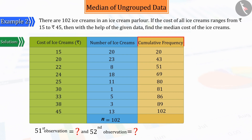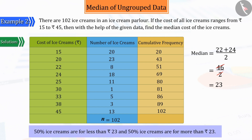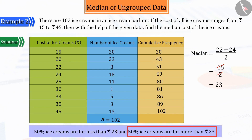From the above table, we can see that the 51st observation is 22 and the 52nd observation is 24, because out of the 102 ice creams, the price of ice creams from the 52nd to 69th is 24 rupees. Now, if we take the average of 22 and 24, it gives the median of the prices of ice creams as 23 rupees. Therefore, we can say that almost 50% of the ice creams are priced less than 23 rupees and the remaining 50% are priced more than 23 rupees.